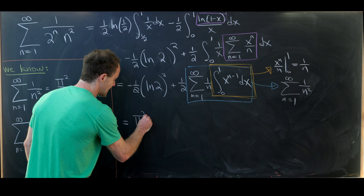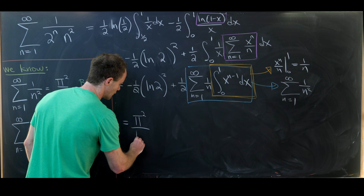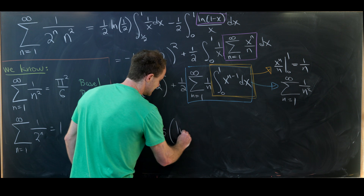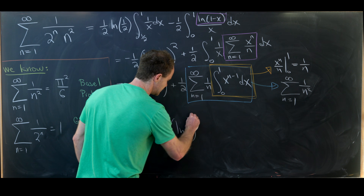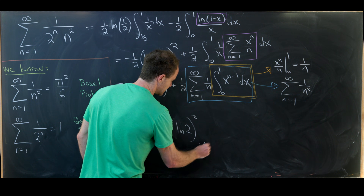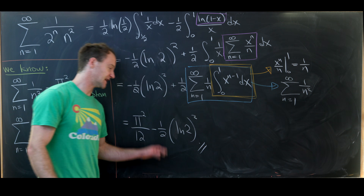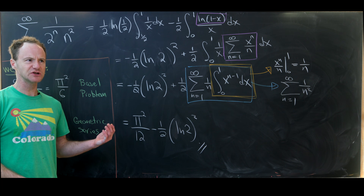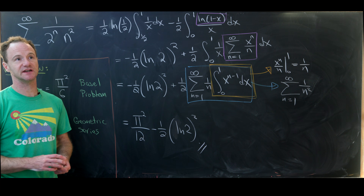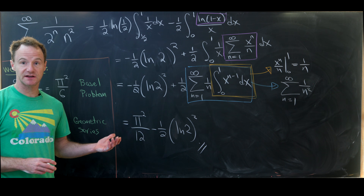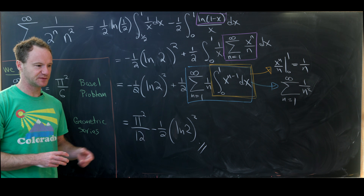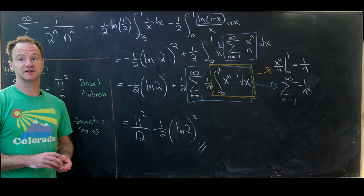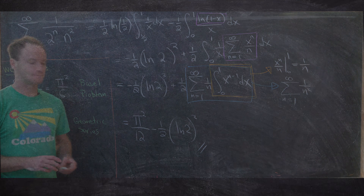So in the end we have pi squared over 12 minus 1 half times natural log of 2 squared as the final closed-form value for this sum. I've done a bunch of other interesting infinite sums on the channel — there should be one on the screen right now if you want to check it out, and that's a good place to stop.